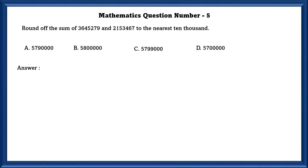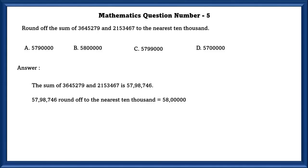Mathematics question number 5. Round up the sum of two numerals to the nearest 10,000. The sum of these two numerals is 57,98,746. Rounded up to the nearest 10,000, we get 58 lakhs.